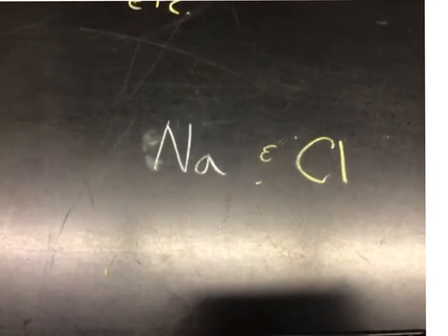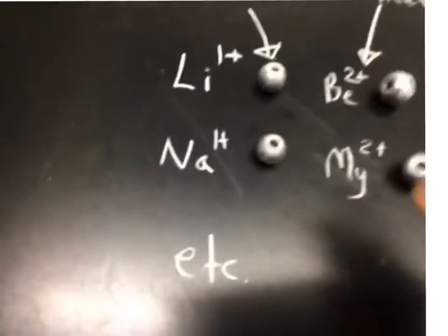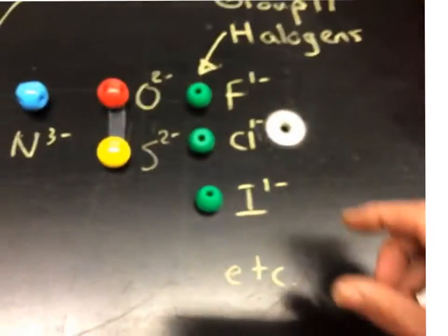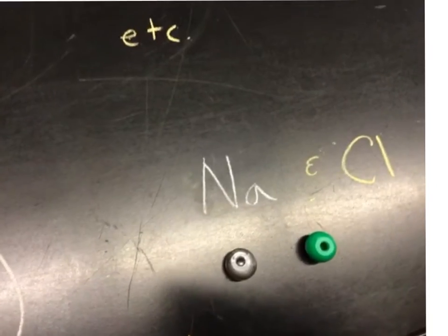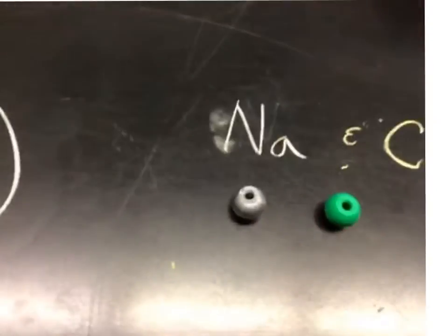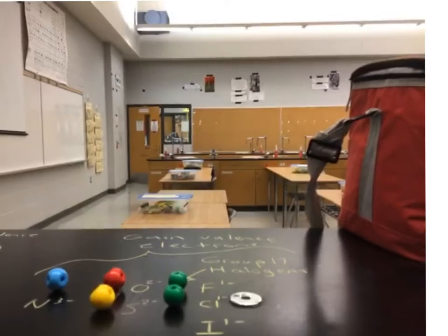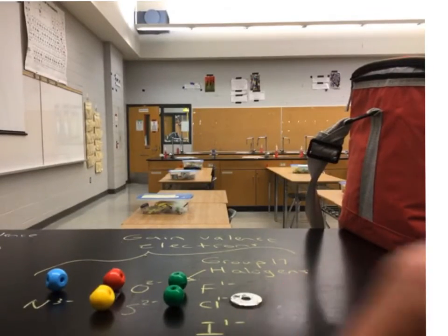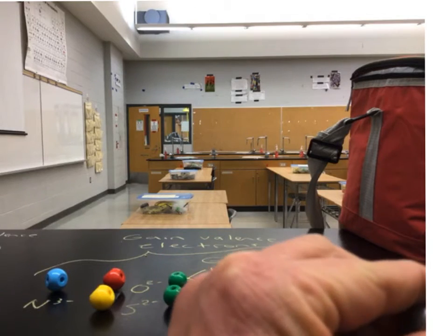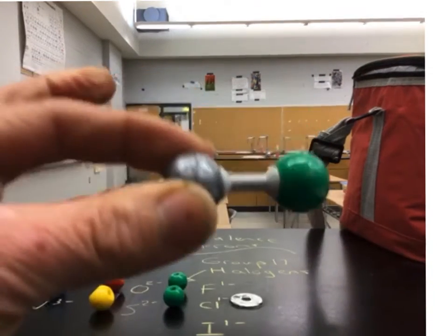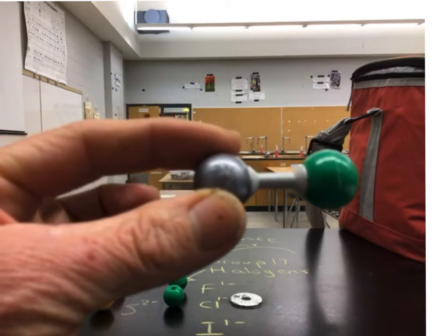So let's try and make something. Let's make Na and Cl. So Na is this guy. I'm going to take him, put him here, take a Cl, put him right here. Sodium wants to give away one electron and chlorine wants to keep one or get one. So we can do this. I take the sodium and I put the little connector piece in and now we've made sodium chloride.